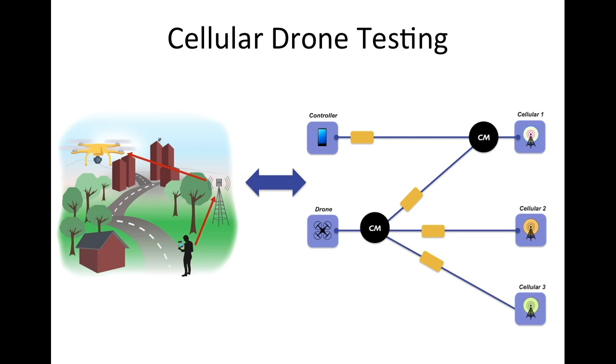In this case, we have shown you an example topology where the drone talks to the controller through the network. And depending on how far the drone is, it might be of the same tower or sector or different sectors.